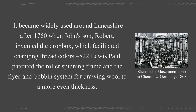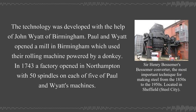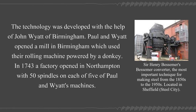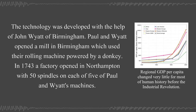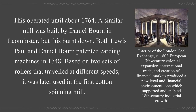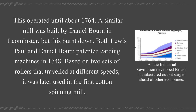Lewis Paul patented the roller spinning frame and the flyer-and-bobbin system for drawing wool to a more even thickness, developed with the help of John Wyatt of Birmingham. Paul and Wyatt opened a mill in Birmingham which used their rolling machine powered by a donkey. In 1740, a factory opened in Northampton with 50 spindles on each of five of Paul and Wyatt's machines, operating until about 1764. Both Lewis Paul and Daniel Bourne patented carding machines in 1748, based on two sets of rollers that traveled at different speeds, later used in the first cotton spinning mill.